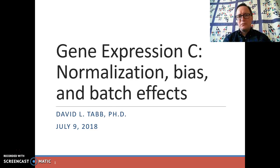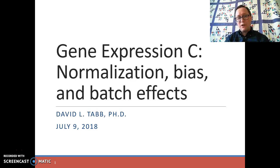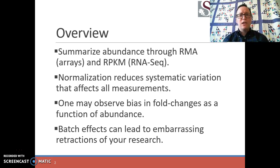Hello, welcome to part three of the video series. Here we're going to start talking about moving away from the technology where we've acquired some sort of signal, either by sequencing directly a messenger RNA or working from some fluorescent signal produced for a probe on a microarray. We'll be talking about three concepts that show up in a lot of biotechnology: normalization, bias, and batch effects. We'll start with how we get our measurements of abundance out of arrays or RNA-seq — in the form of RMA in the case of arrays, and RPKM in the context of RNA-seq.